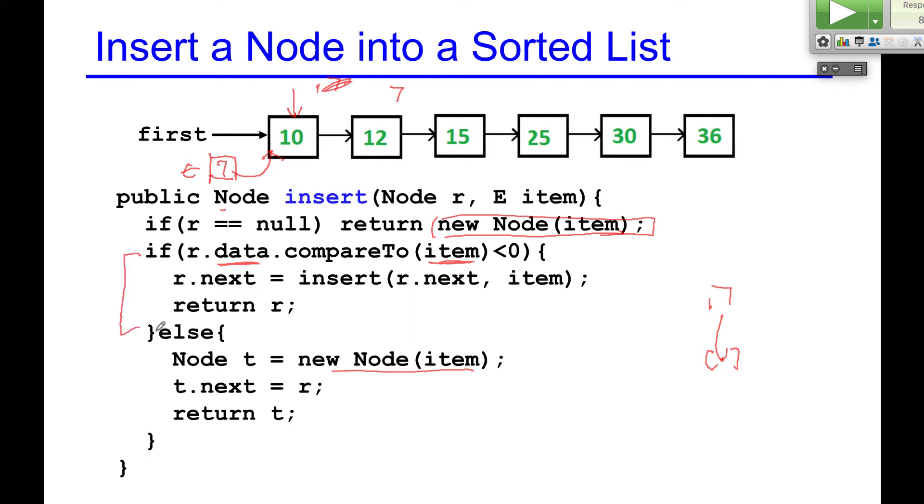What if you want to insert 17? Call to insert 17. 17, it said, hey, R is smaller. That's right. R is smaller. So this is my R. R, the data is smaller than 17. What are you going to do? You say, okay, 17 should be inserted somewhere in my tail.